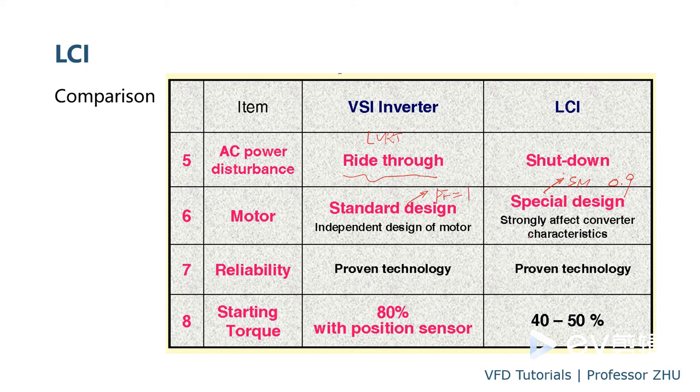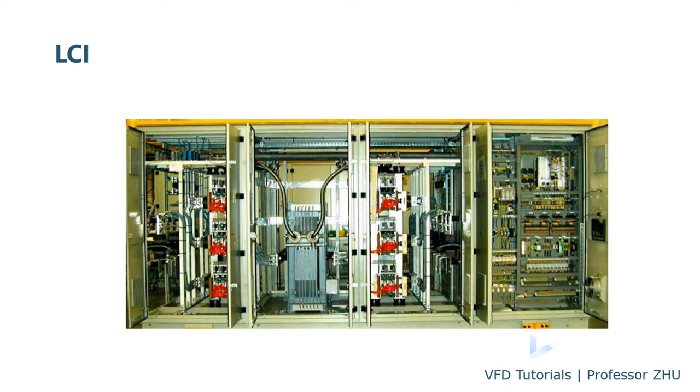And the reliability, both of them are reliable. And for the starting torque, LCI because of the harmonic and torque ripple, normally it's 40 to 50 percent. But for the VSI, it's much higher. And here is a typical outlook of the LCI drive. Here is a rectifier, AC to DC, reactor on the DC, DC to AC, and control.